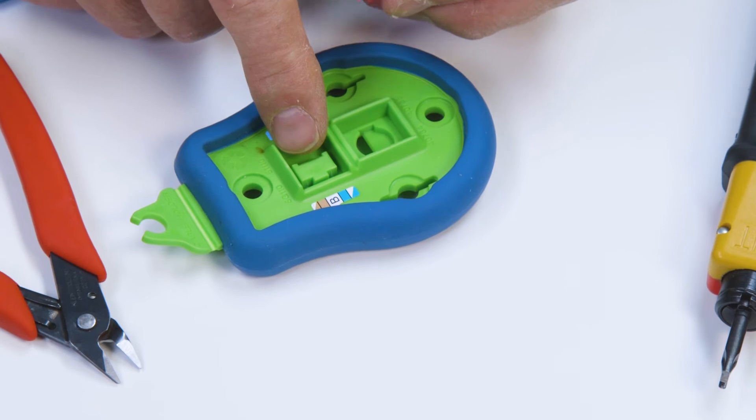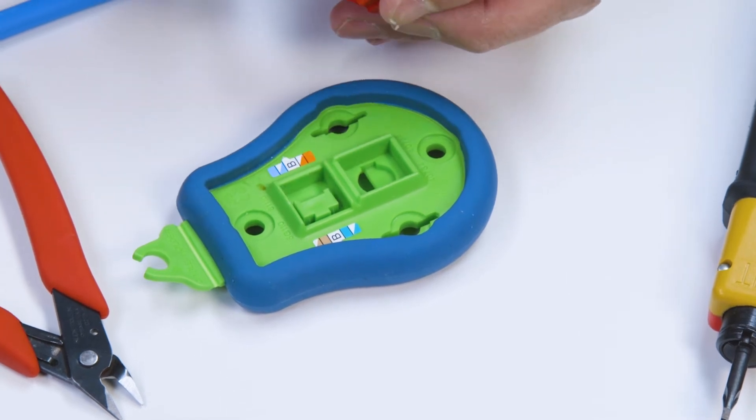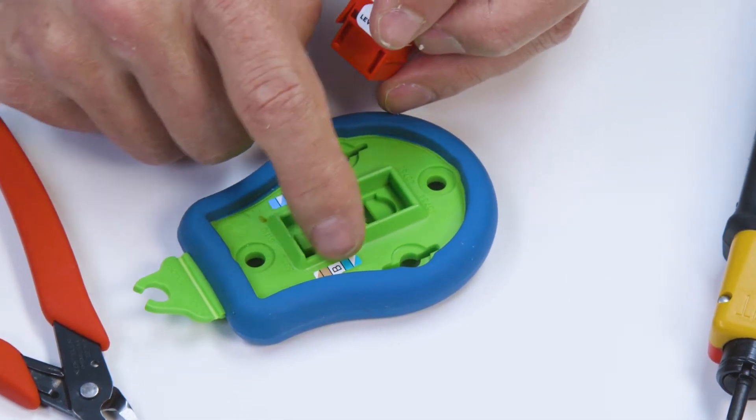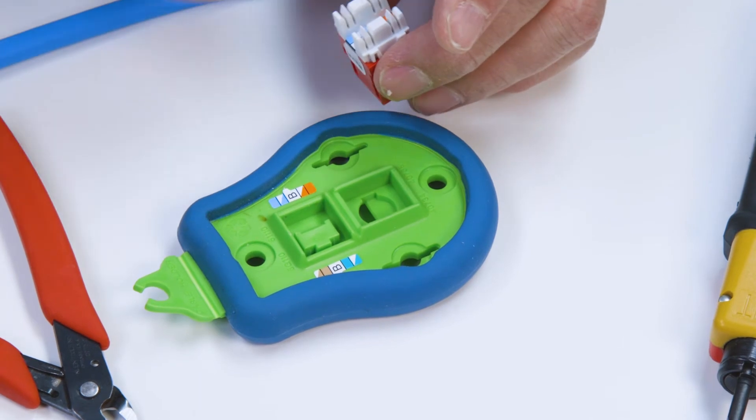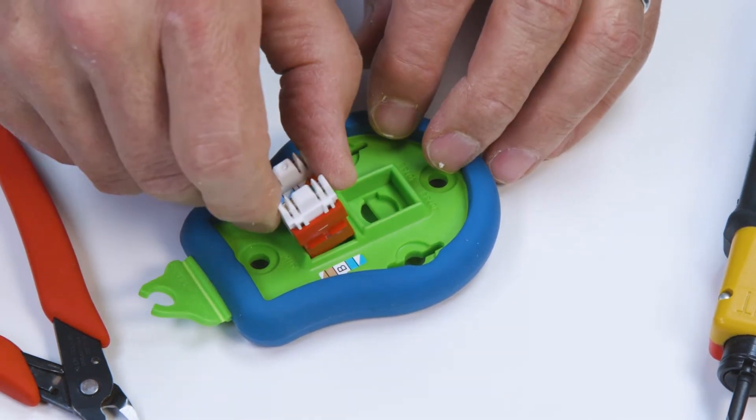For fast, simple termination, use a Leviton palm tool when terminating the extreme jack. The palm tool is shipped with B wiring labels installed, but it can be modified with the A labels that are included.